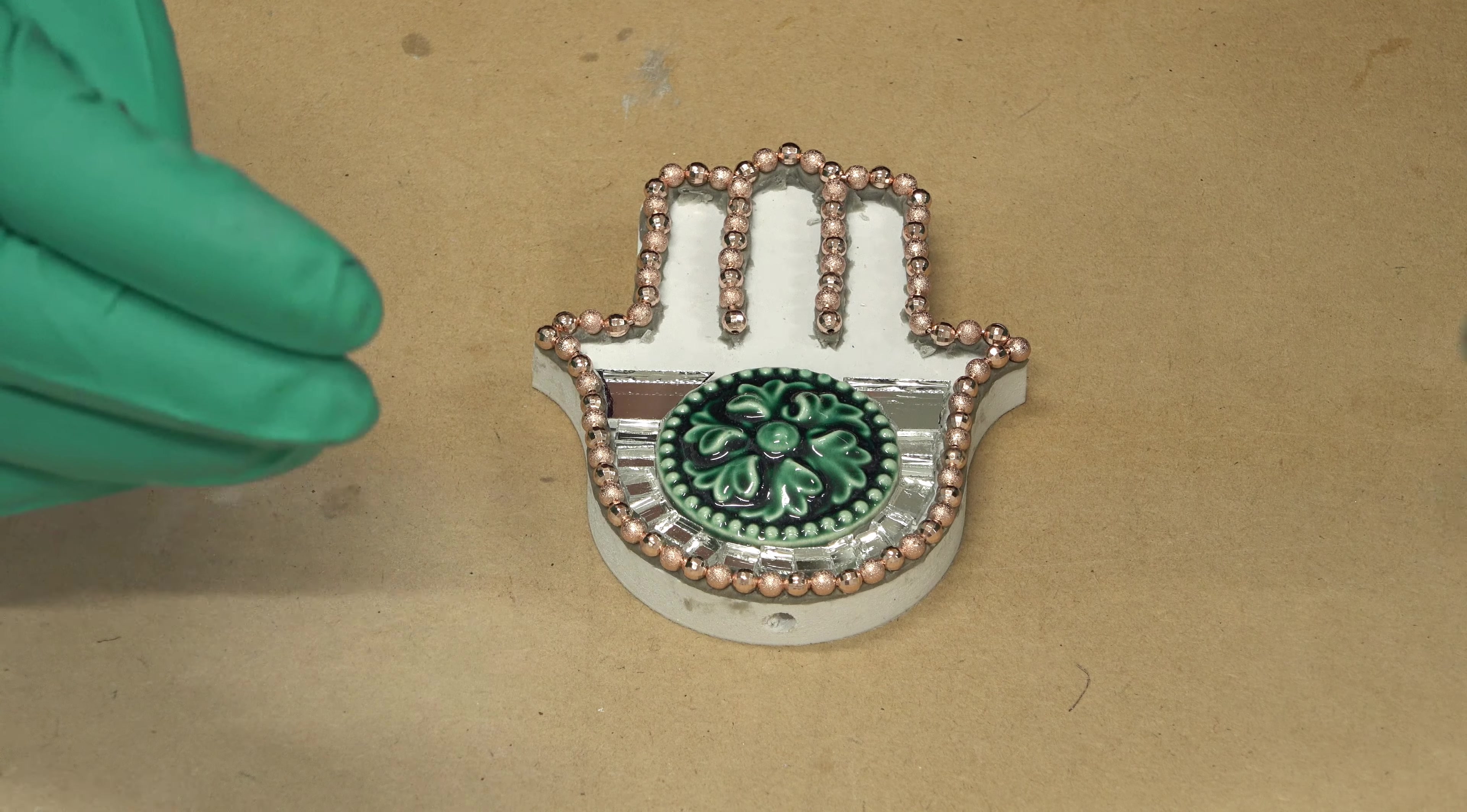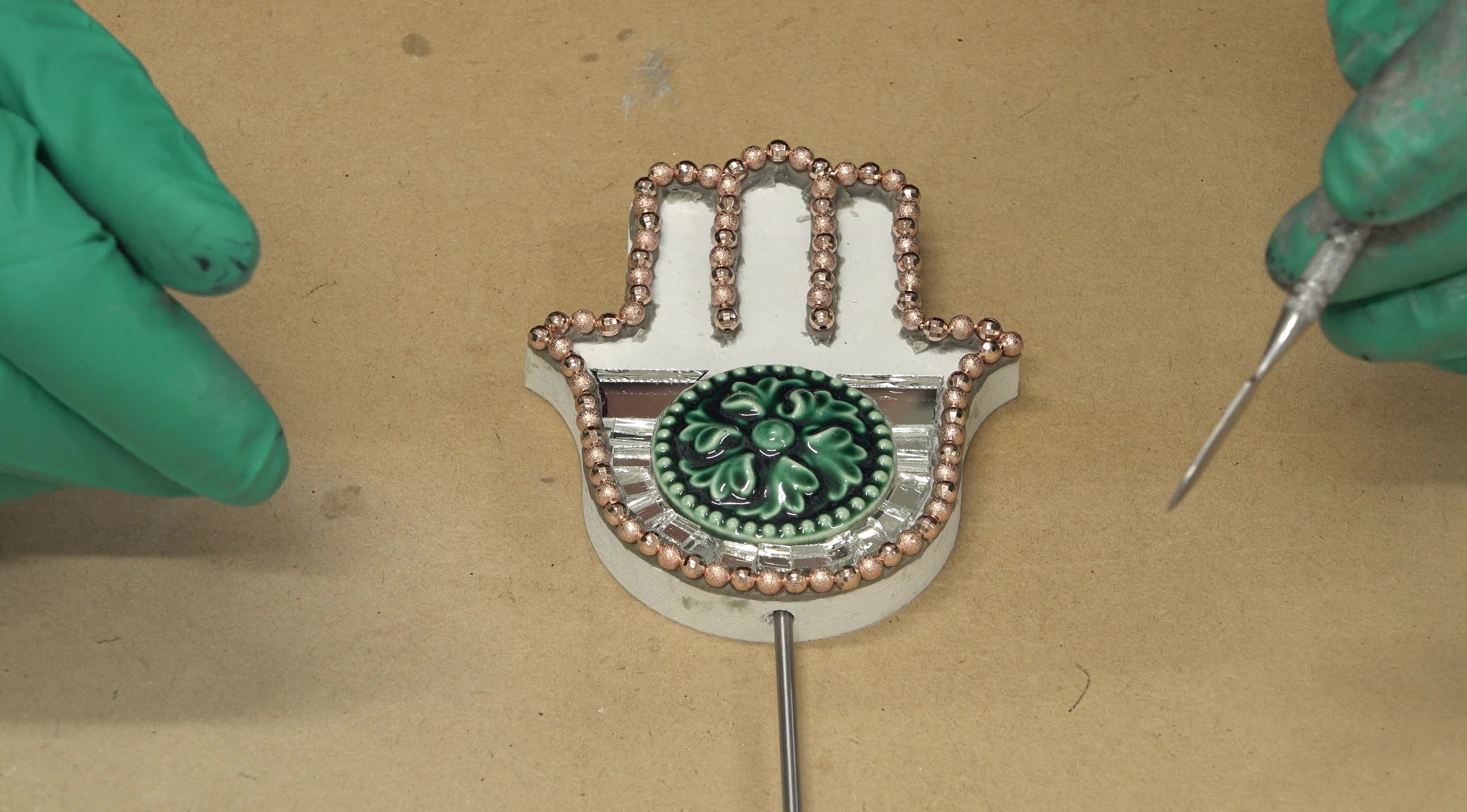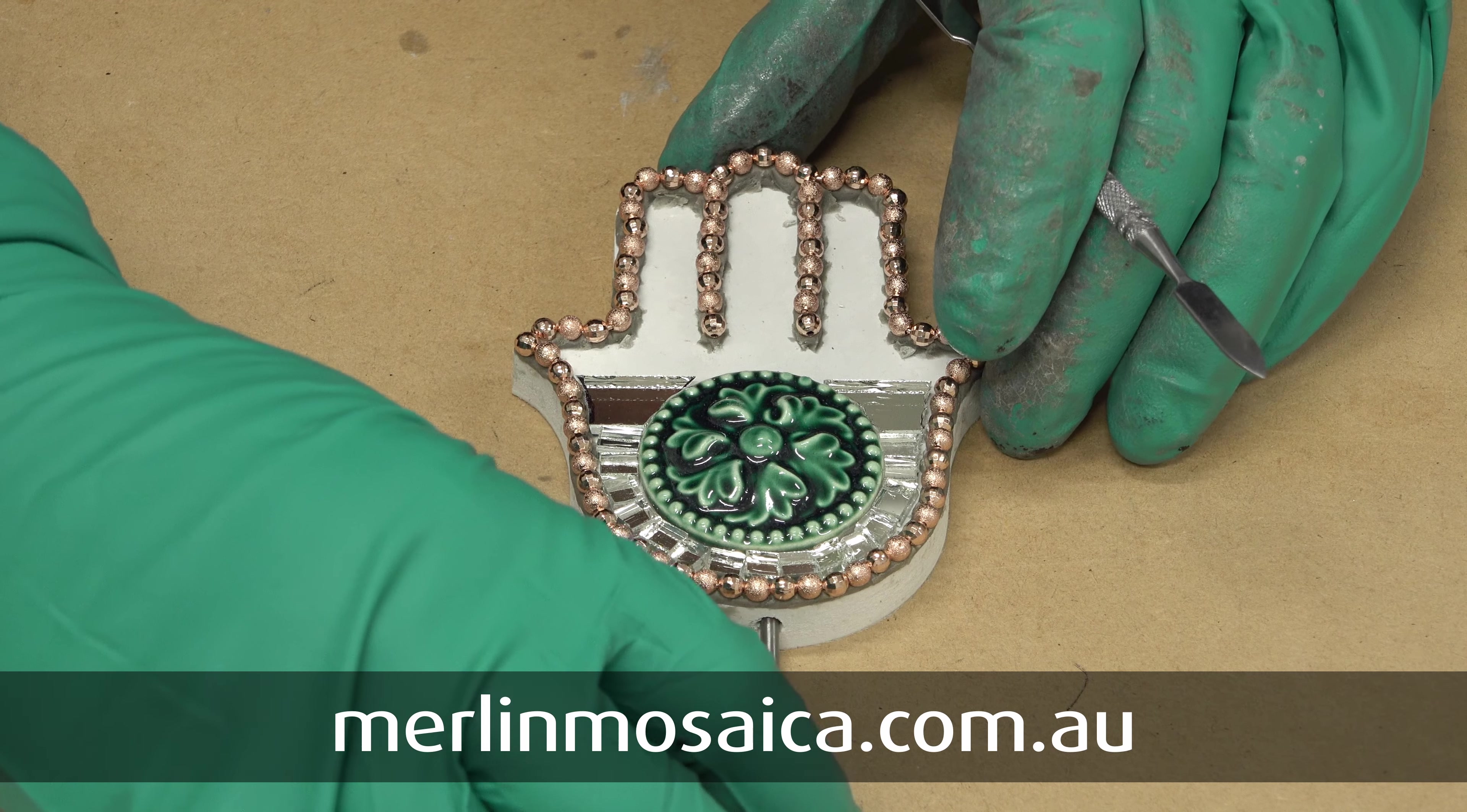Now the next project I'm going to be working on is from the garden stake range from Merlin Mosaica. This is the medium size and I'll put their website down the bottom of the screen and also in the description box of this video in case you'd like to go and have a look at their substrates.